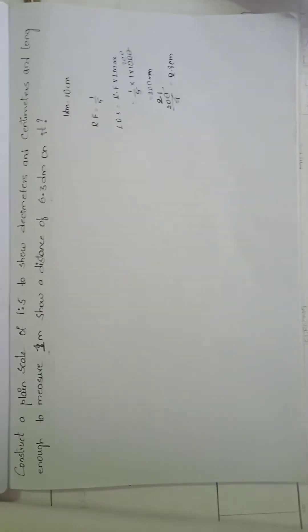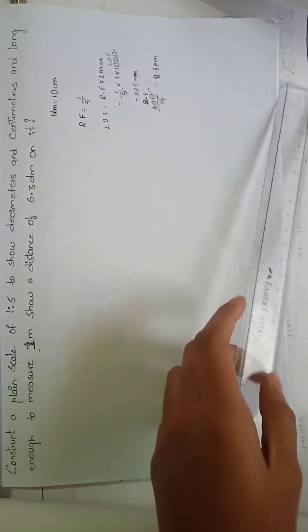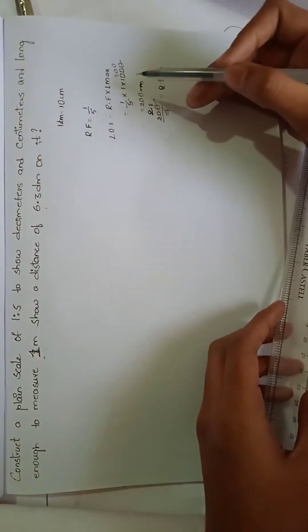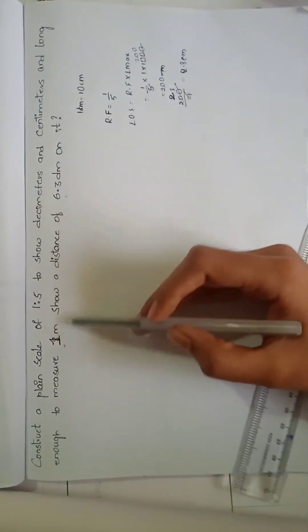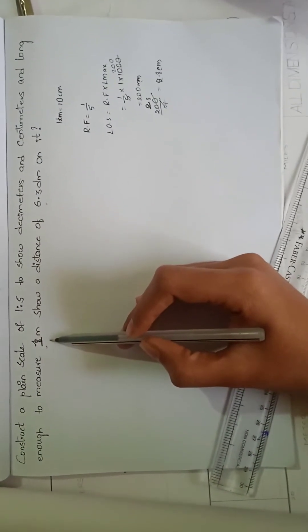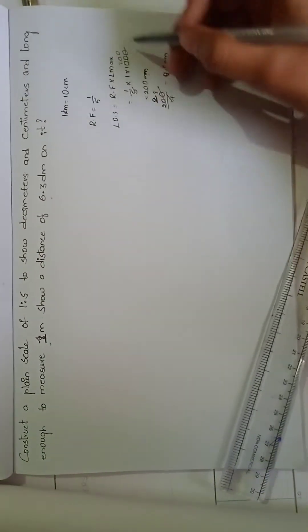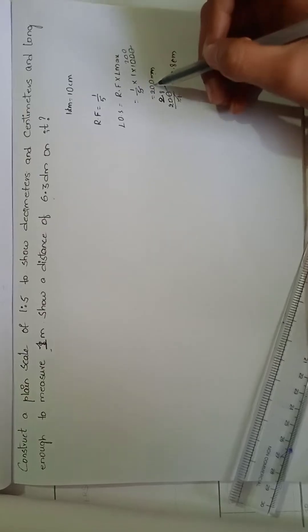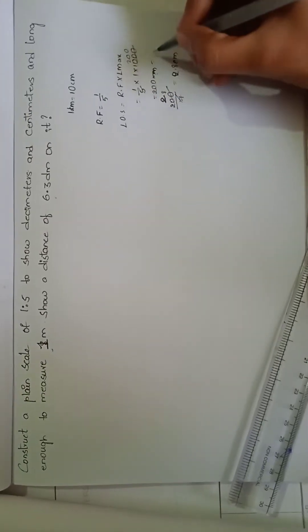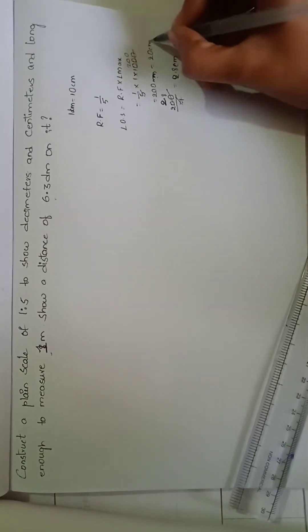Now we have a formula to find the length of the scale: that is RF into maximum length. The RF is given as 1 by 5 and maximum length is given as 1 meter. We have to convert this into millimeters, so we have to multiply with 1000. So we get the length of the scale is 200 millimeters. We have to convert this into centimeters, that is 20 centimeters.